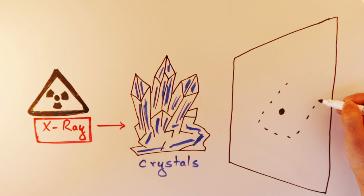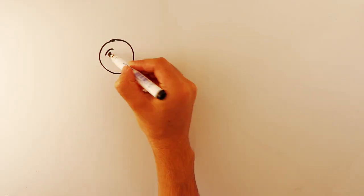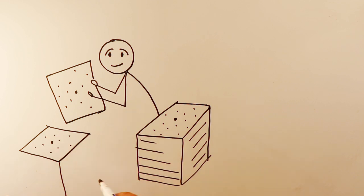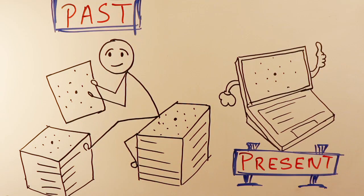But remember, you cannot see X-ray, so in order to see those diffraction pattern, you need photographic plates. In early days, scientists used photographic plates to record and analyze those patterns, but nowadays, it can be done via computer.